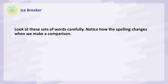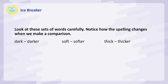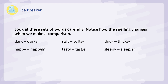Look at these sets of words carefully. Notice how the spelling changes when we make a comparison: Dark — darker. Soft — softer. Thick — thicker. Happy — happier. Tasty — tastier. Sleepy — sleepier.